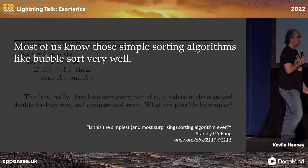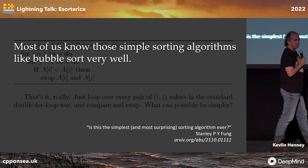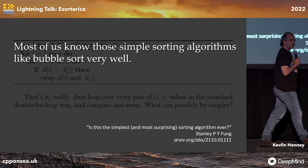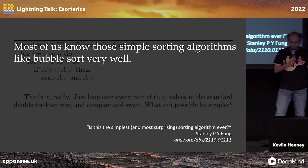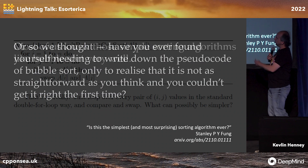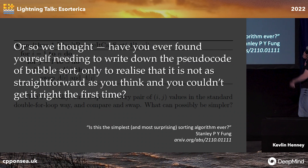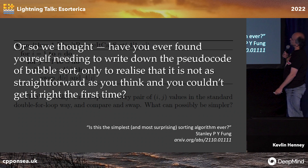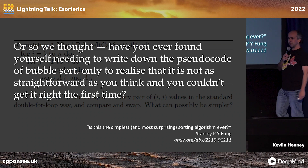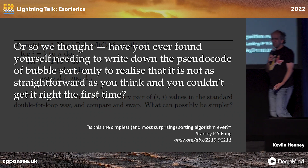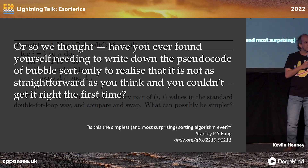Bubble sort is surprisingly hard to get right. Everybody mocks it, but they still can't get it right. Have you ever found yourself needing to write down the pseudocode for bubble sort, only to realize it's not as straightforward as you think, and you couldn't get it right the first time? Everybody said, of course I can get it right first time — except for all the off-by-one errors.